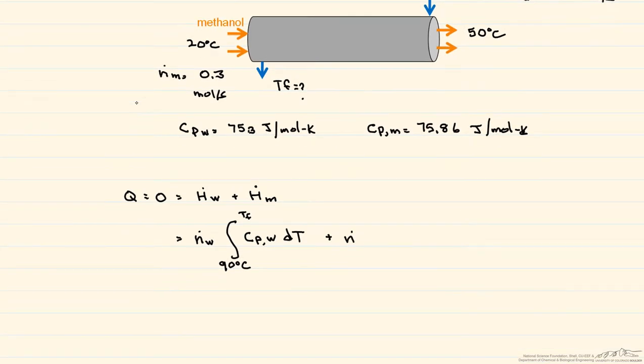Plus the molar flow rate of the methanol, and now here the initial temperature is 20 degrees C and the final temperature is 50 degrees C, and this is C sub P of the methanol, DT. And again, that's going to be equal to zero.